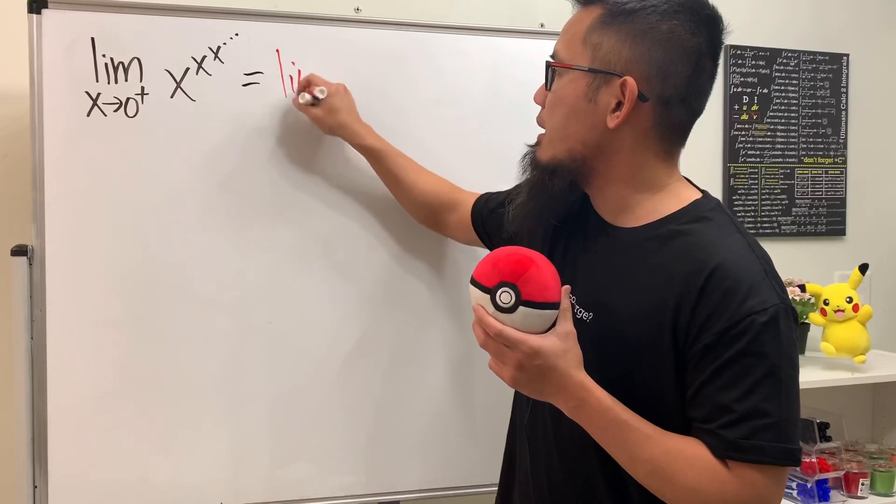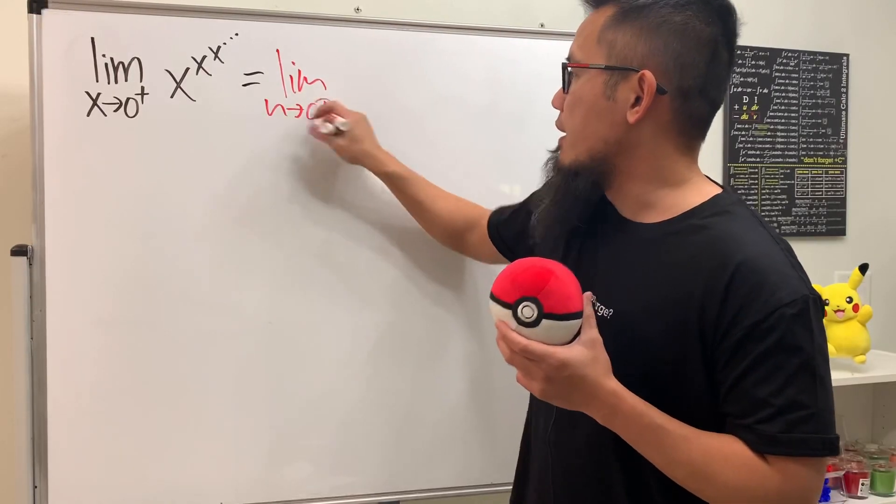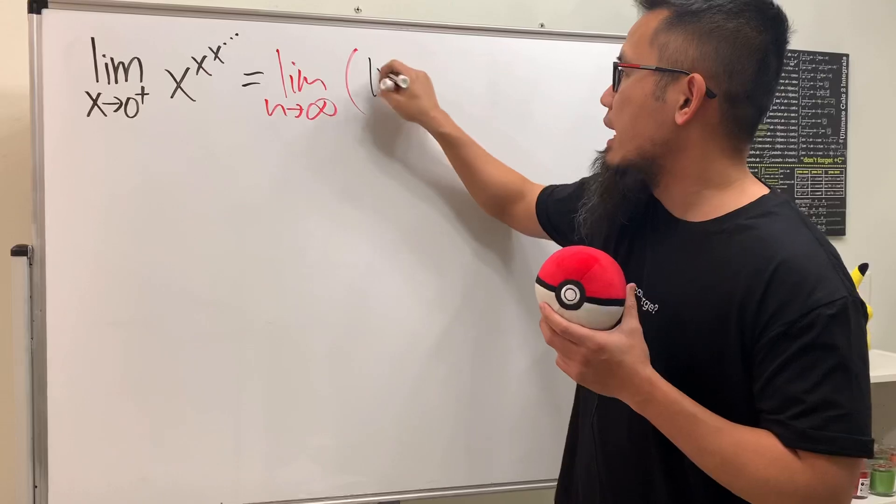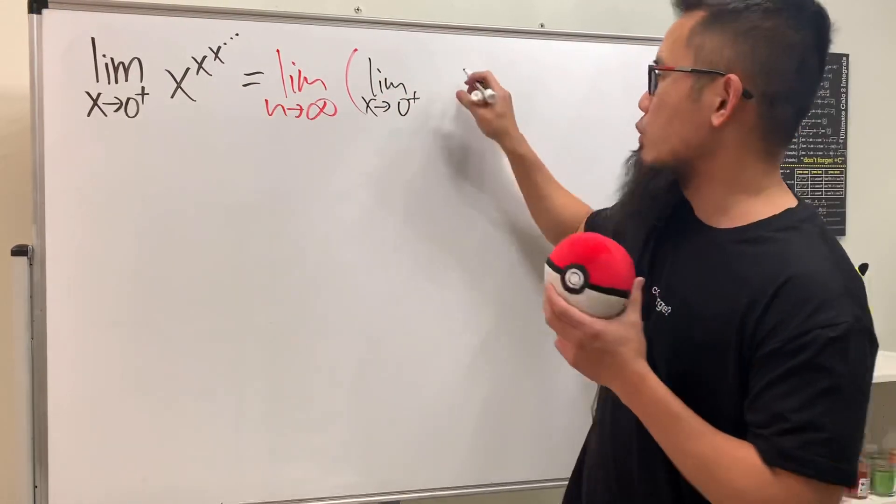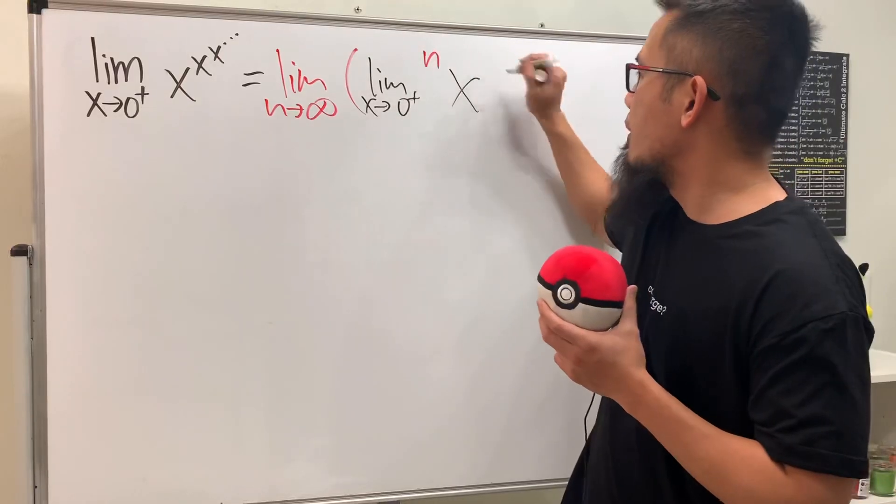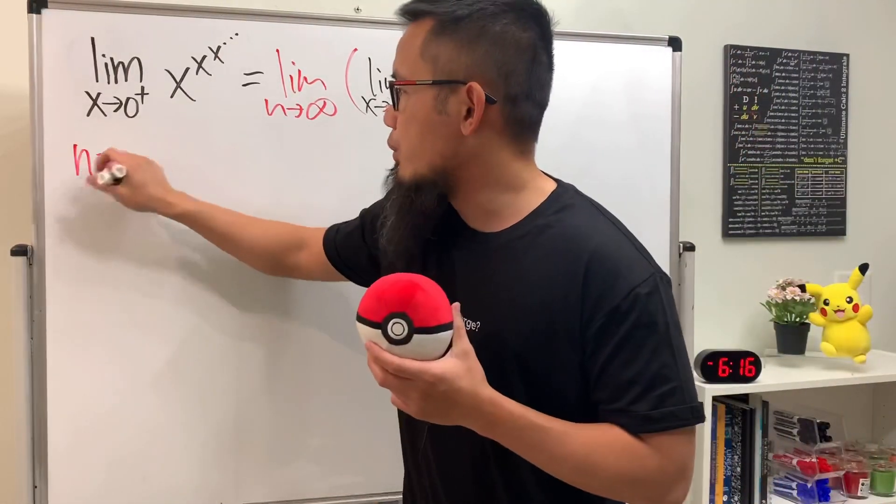So we have to do the following: take the limit as n goes to infinity, and then take the limit as x goes to zero plus. In that notation, we can write it with n levels. Let's check this out when n equals 2.